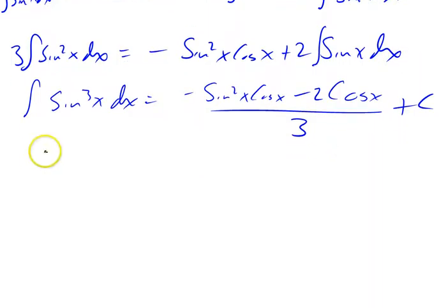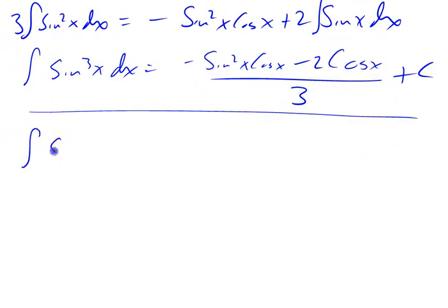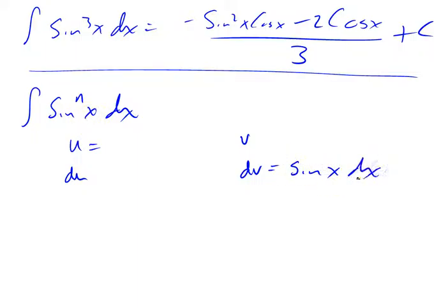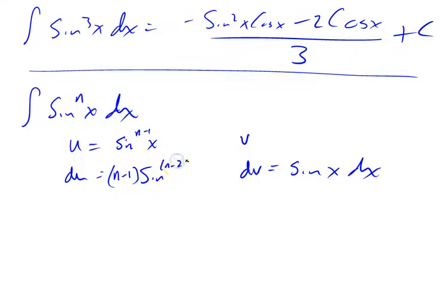The point is that I started with an integral of sine cubed and ended up with an integral of sine x. So let's try this on a bigger scale. Let's look at the integral of sine to the n of x dx, and we'll do this in a very similar way. I'm going to set up u, du, v, dv. I'm going to take one of the sine x's and put it in dv, and all the rest of them in u — so if there's n to start with, there's now n minus 1 of them.